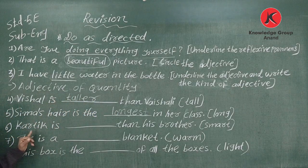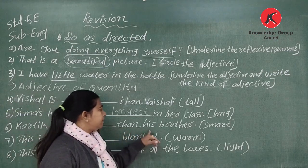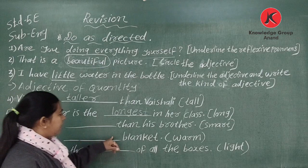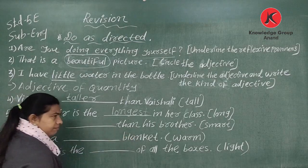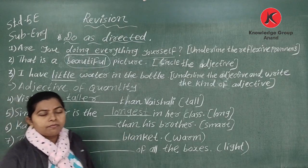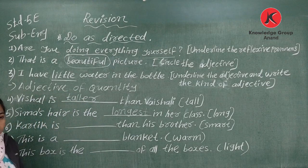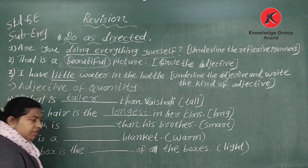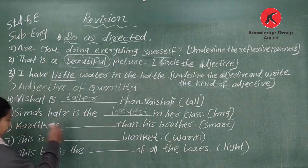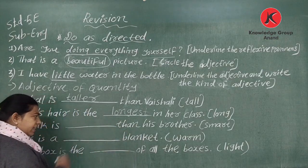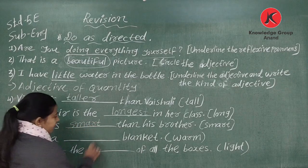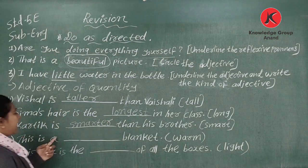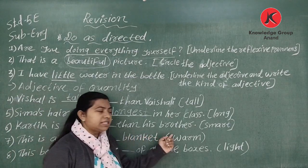Number six: 'Karthik is ___ than his brother.' Bracket says 'smart.' Since blank is before 'than,' this is comparative degree. So Karthik is smarter than his brother. Comparative degree: we add E-R to the adjective.